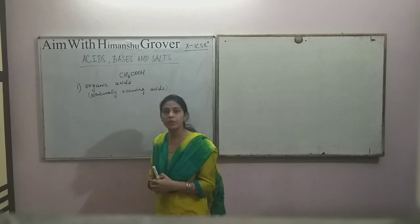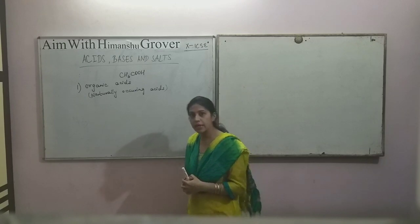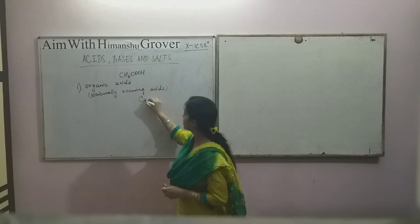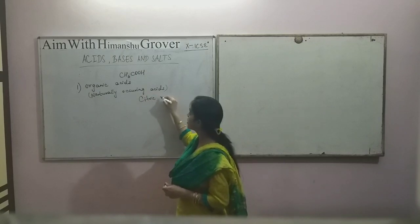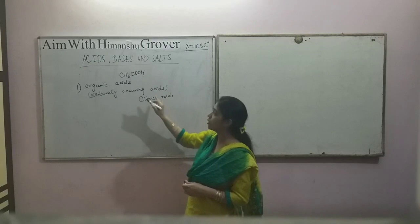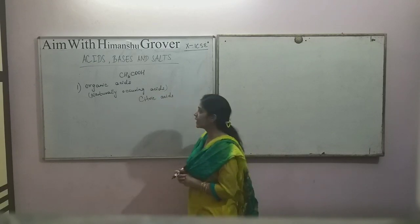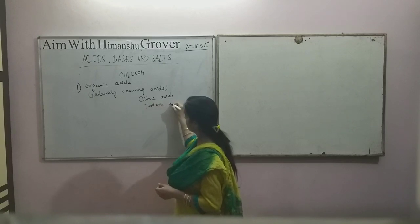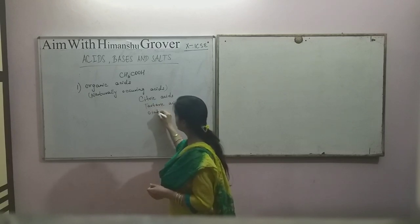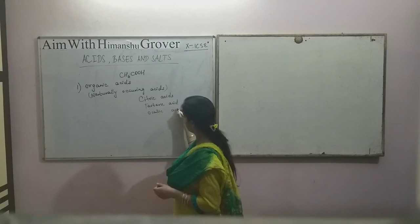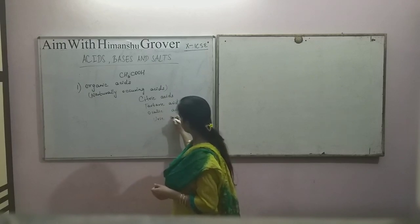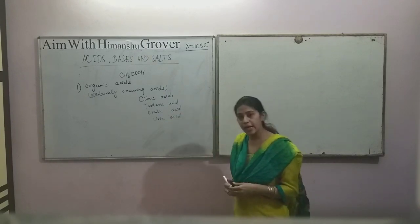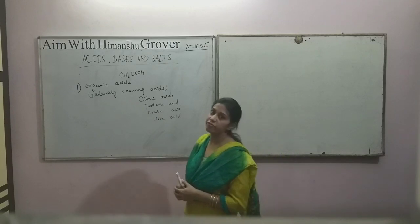Methanoic acid is also a naturally occurring acid which is found in ants. Next is citric acid, which is found in citrus fruits — it is also an organic acid. Tartaric acid, oxalic acid, uric acid, etc. — all these are naturally occurring acids that we get from plants or animals.